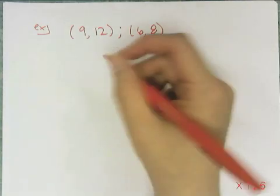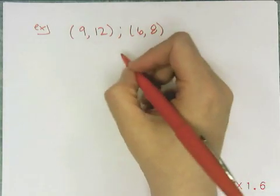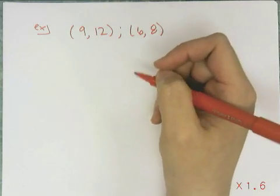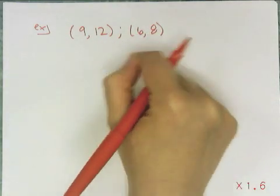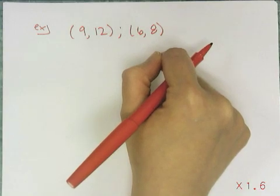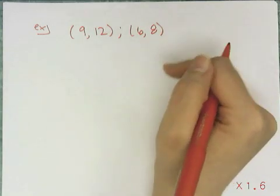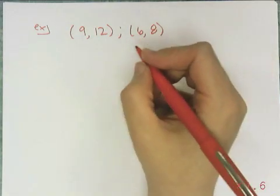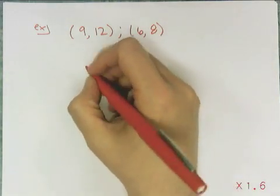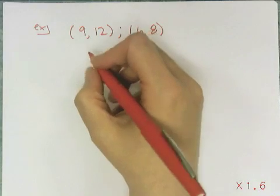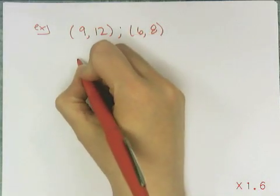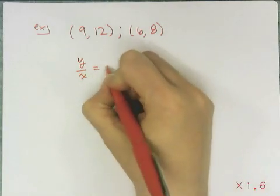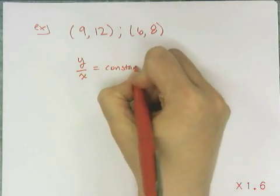The question is: do the points (9, 12) and (6, 8) form a direct variation? Do 9 and 12, and 6 and 8 form something that's directly proportional? Are x and y directly proportional to each other? It's quite easy to check, because what I need to find for a direct variation is that the quantity y over x is going to be constant for every single data point.